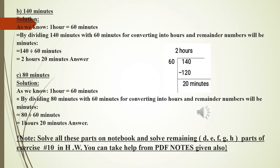Part B is 140 minutes. We divide 140 by 60. 60 multiplied by 2 is 120. 140 minus 120 gives a remainder of 20 minutes. So the answer is 2 hours and 20 minutes. For part C, we have 80 minutes. We divide 80 by 60. 60 multiplied by 1 is 60. 80 minus 60 gives a remainder of 20. So the answer is 1 hour and 20 minutes.